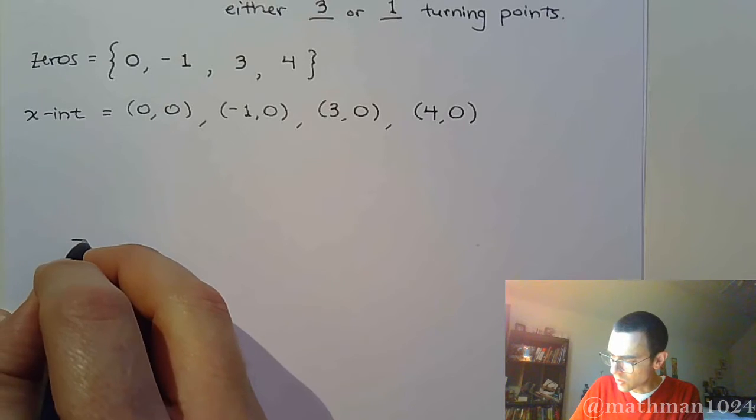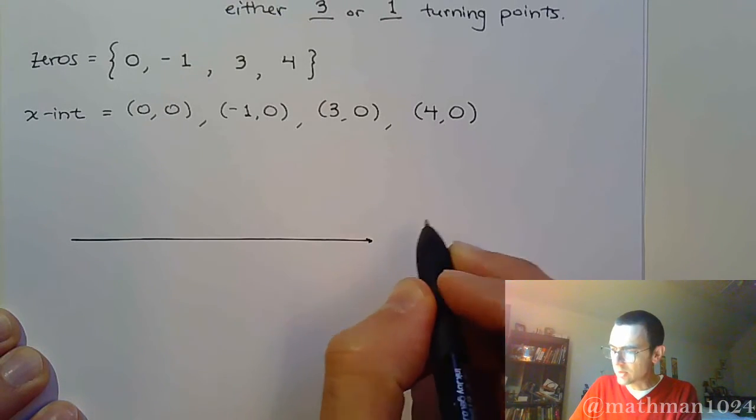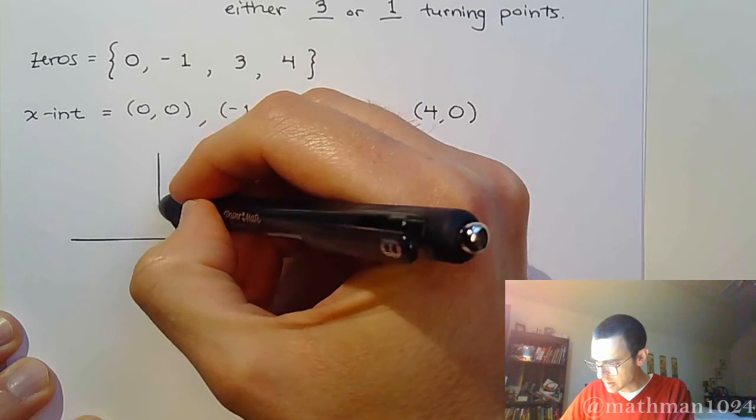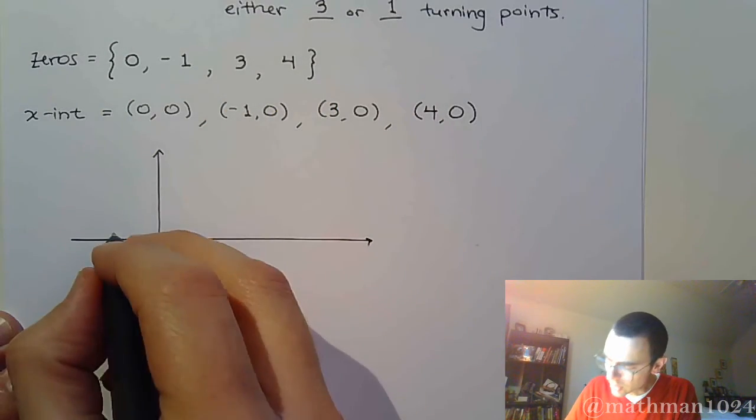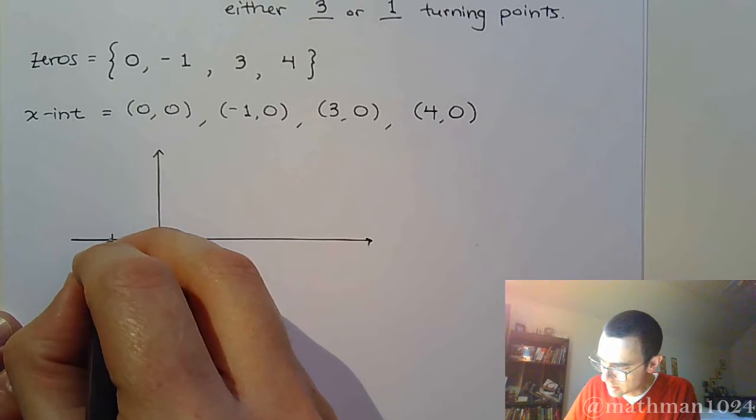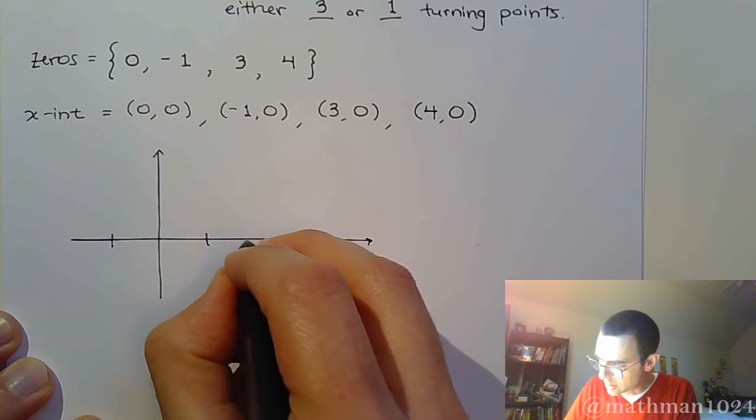Alright, so using these x-intercepts and the zeros. Let's see, we have crossing here at negative one. And then... two.